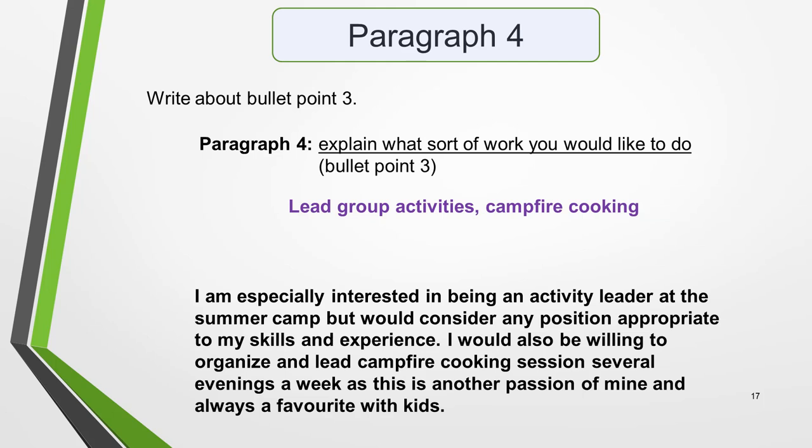Paragraph 4 addresses the third bullet point, which is to explain what sort of work you would like to do. My idea is to lead group activities and do campfire cooking. You could write something like this: 'I am especially interested in being an activity leader at the summer camp, but would consider any position appropriate to my skills and experience. I would also be willing to organise and lead campfire cooking sessions several evenings a week, as this is another passion of mine, and always a favourite with the kids.'